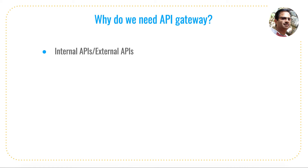So let's talk about why we need the API gateway. The first point is internal APIs versus external APIs. In your company you might have internal customers and external customers. If you want to restrict certain APIs only to internal customers, or expose certain APIs only to external customers, you can set up the configuration in the API gateway to control that access. For example, if you have internal customer data within your company and want to expose it only to internal applications, you can configure the API gateway to do exactly that.